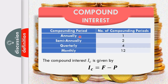The compounding periods and their N values are: annually N equals 1, semi-annually N equals 2 since there are two 6-month periods in a year, quarterly N equals 4 since there are four 3-month periods in a year, and monthly N equals 12. The compound interest I sub C is given by F minus P, that is, the maturity value minus the principal.